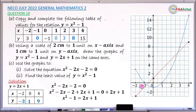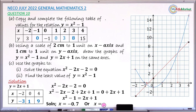Read the x-values at the two intersection points of the curve and the line. The first intersection gives x approximately equals minus 0.7, and the second intersection gives x approximately equals 2.7. These are the two solutions to the equation x squared minus 2x minus 2 equals 0.